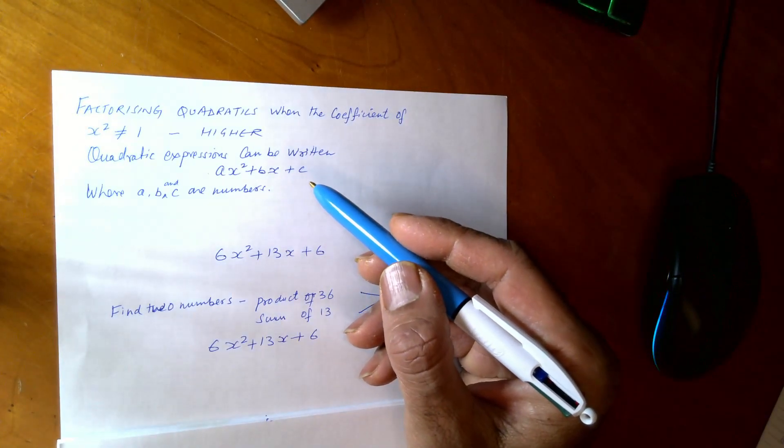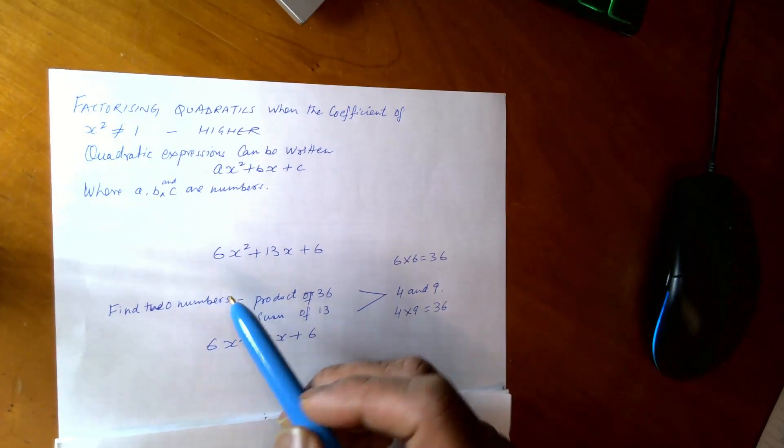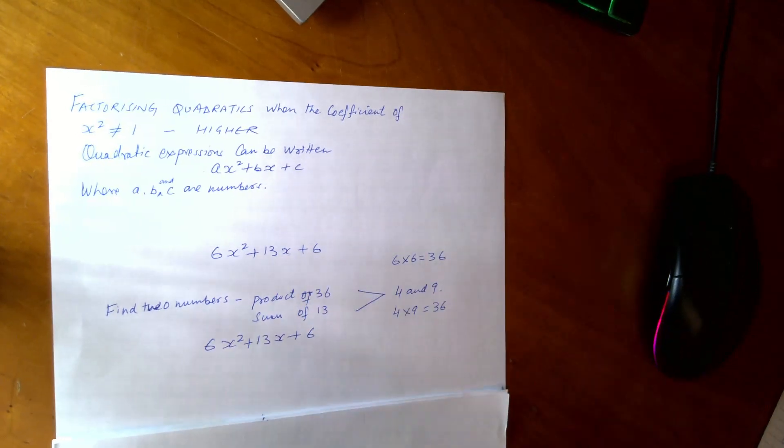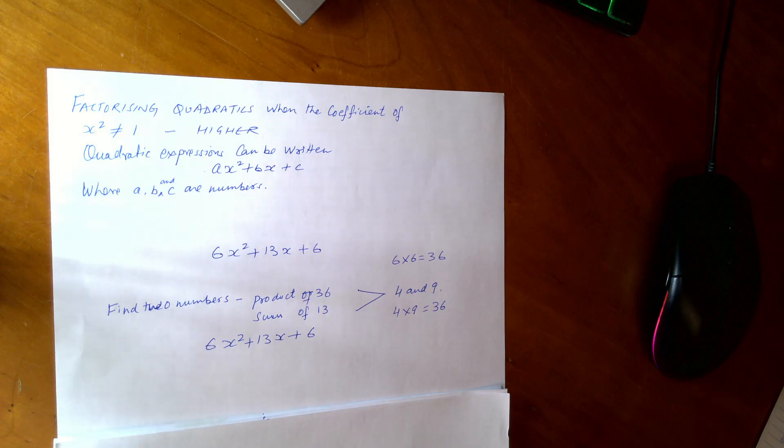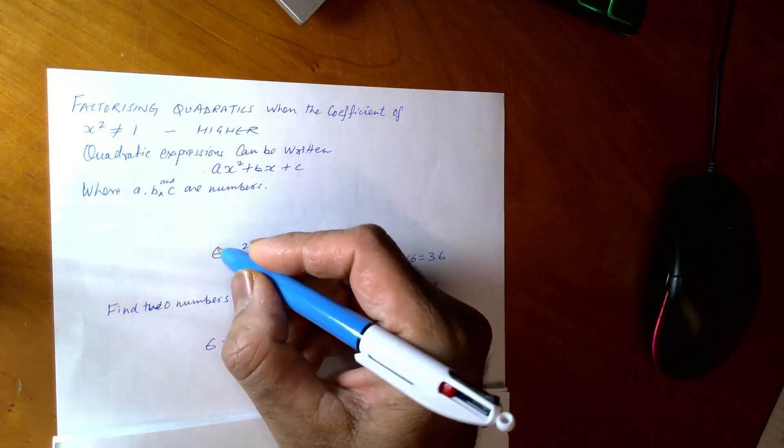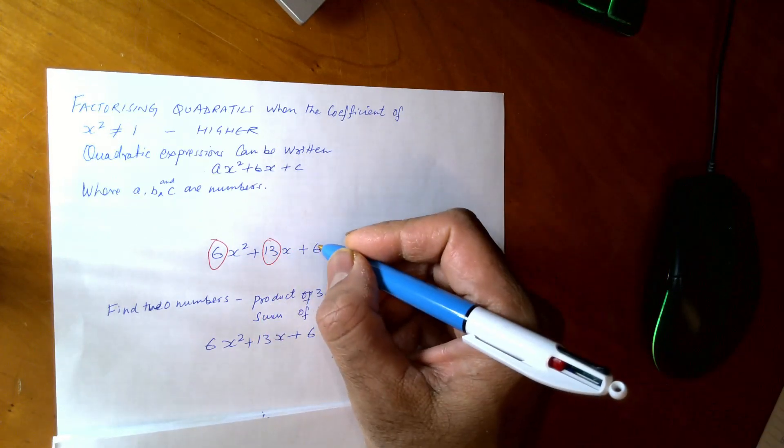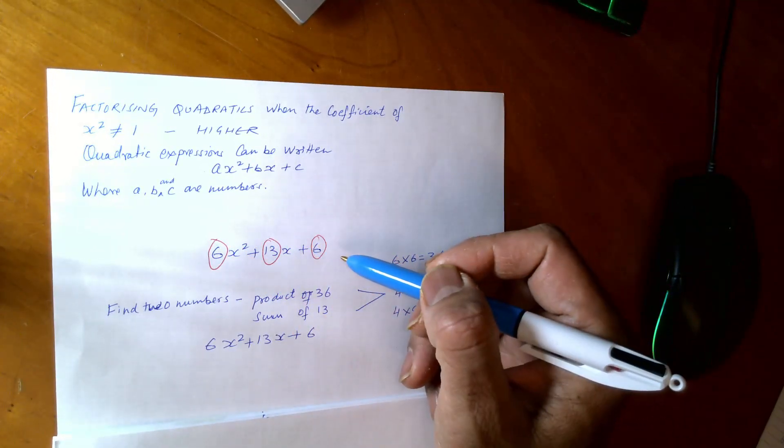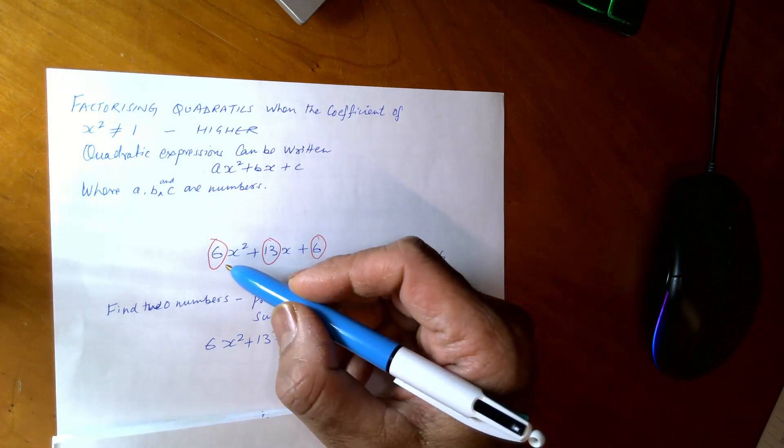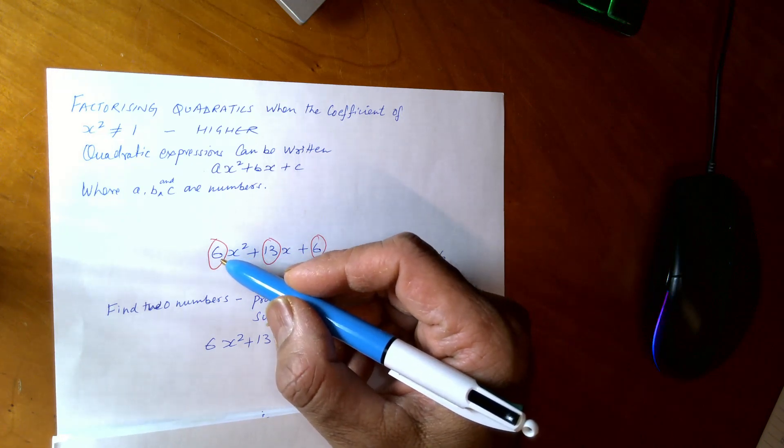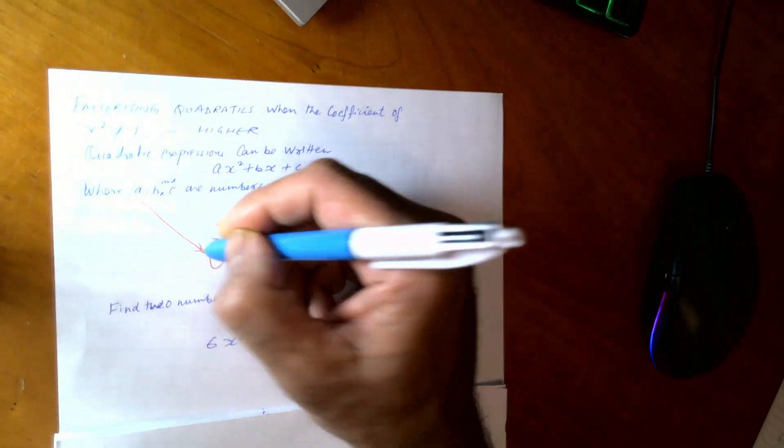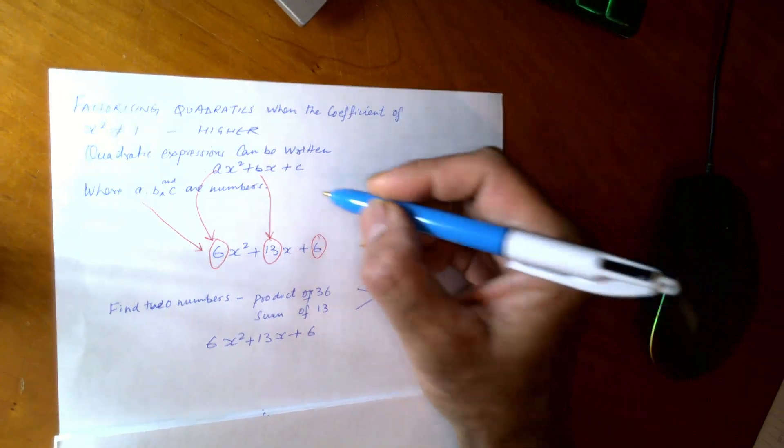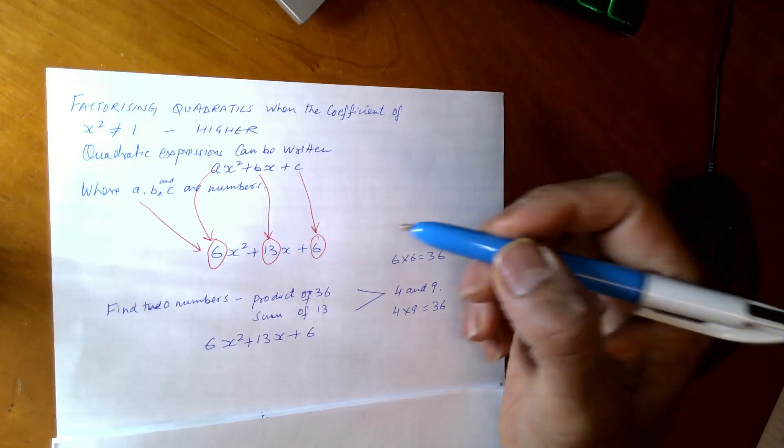So there is one example here of quadratic equation which is 6x squared plus 13x plus 6. And in here, you have 6, 13, and 6 again. These are the numbers. And you can also say that 6 here is a, like the coefficient. b here is 13 and c here is 6. Is this clear so far?